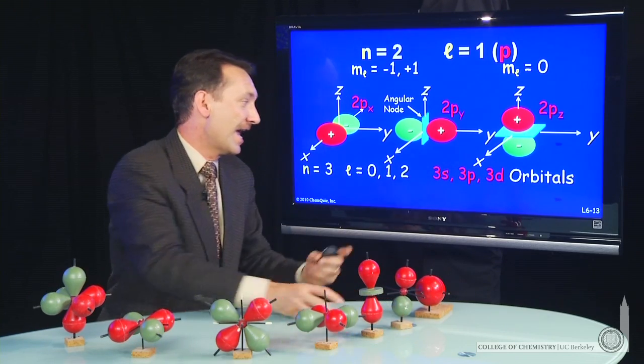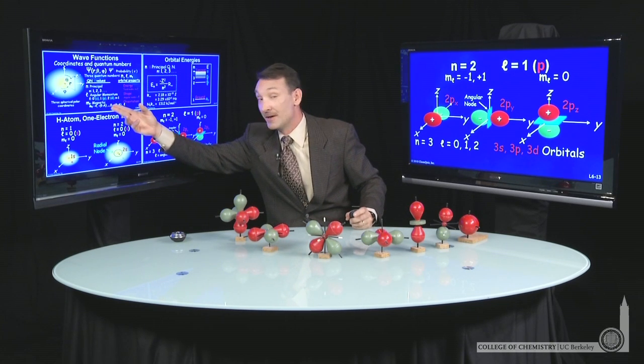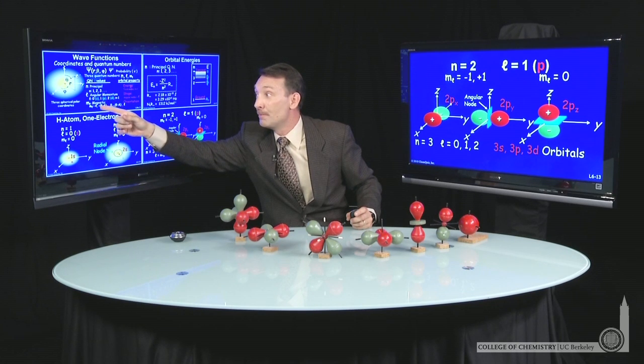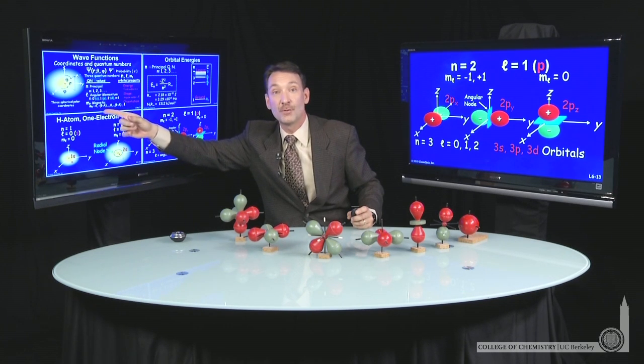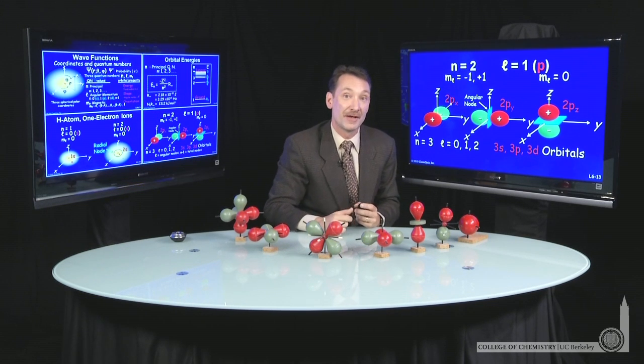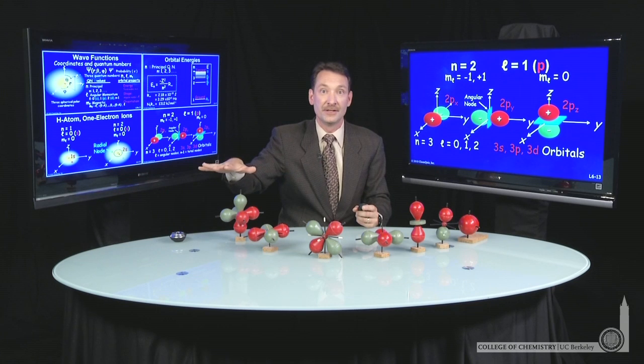When you get to l equal 2, now we can have five possible values of m sub l. Remember, l equal 2 means m sub l goes minus 2, minus 1, 0, 1, 2. Five values of m sub l. So there's five orbitals in the d value.